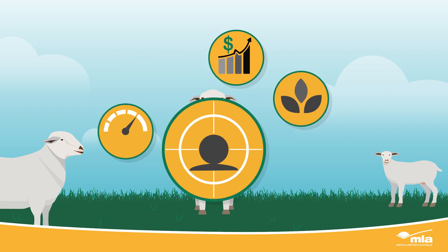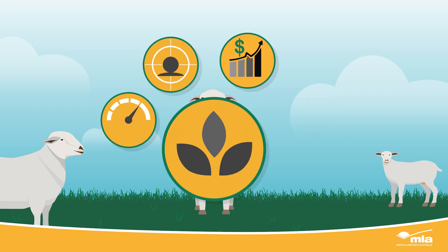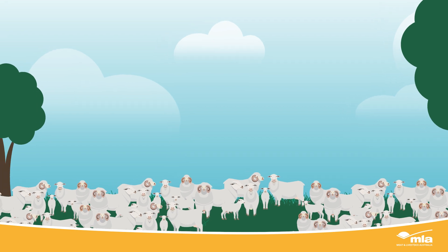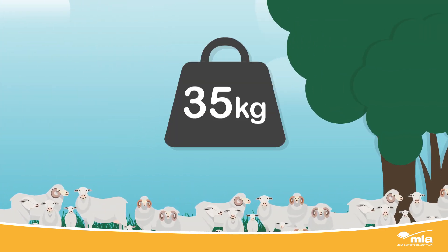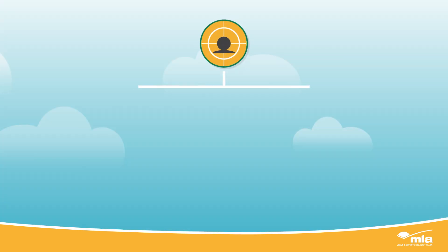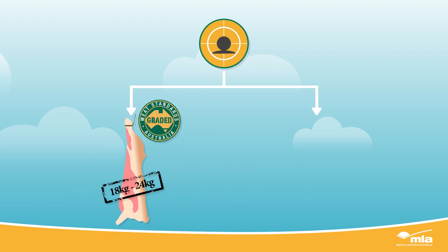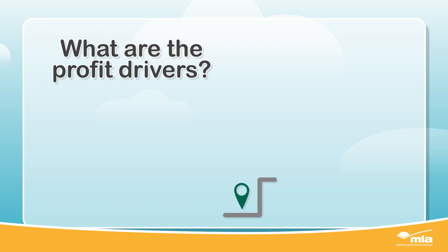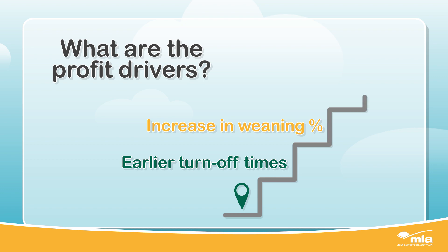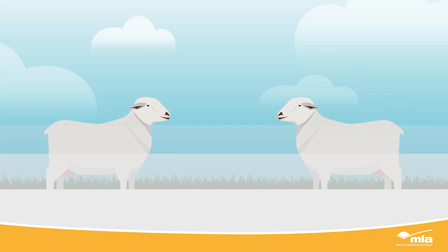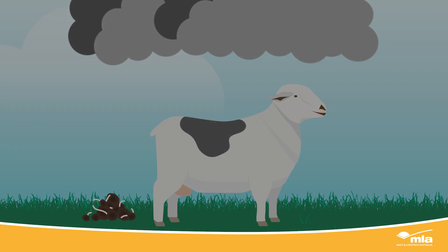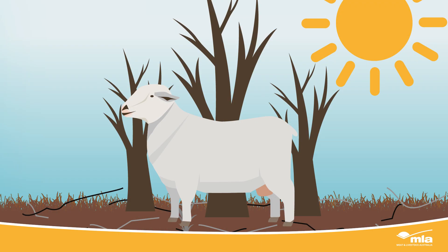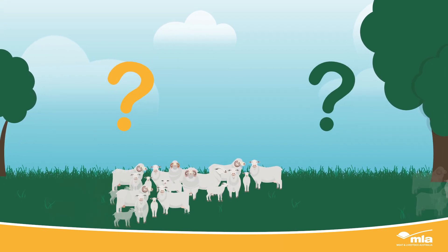Consider your flock's current performance, target market, profit drivers, and the environment you operate in. Is your average weaning percentage 85%, 90%, or 95%? Is your average weaning weight 35 or 45 kilograms? Does your target market require MSA graded lambs at 18 to 24 kilograms dressed, or an average wool clip of 19 micron? Are the profit drivers earlier turnoff times, increased weaning percentage, or a heavier wool cut? Are there challenges like high worm risk, fleece rot, or climate variability?